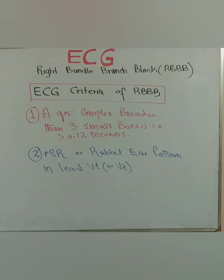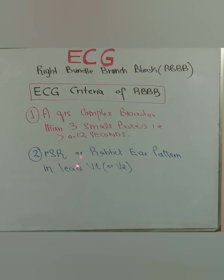We can conclude that the ECG criteria for right bundle branch block are: a QRS broader than three small boxes, or broader than 0.12 seconds, and an RSR prime or rabbit ear pattern in lead V1 — or it may also be seen in lead V2. There is also slurring of the S wave in leads V5 and V6.